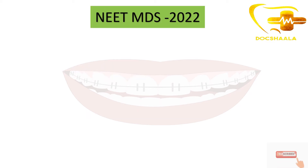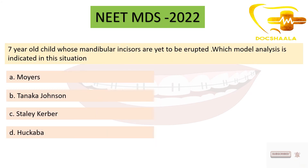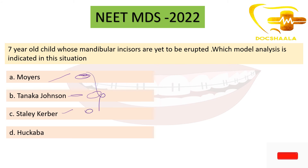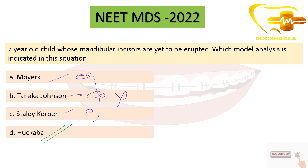A question from EAT MDS 2022: A seven-year-old child whose mandibular permanent incisors are yet to erupt — which model of analysis is indicated? The options are Moyers, Tanaka-Johnson, Staley-Kabber, and Hukaba. In Moyers, Tanaka-Johnson, and Staley-Kabber, we measure the mandibular incisor width for assessment — so these three require erupted incisors. The only analysis that does not require measurement of mandibular incisor width is Hukaba analysis. Therefore, since the incisors are not yet erupted, Hukaba analysis is the correct answer.